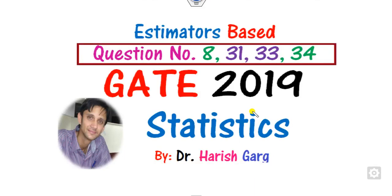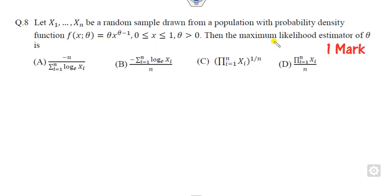Hello everyone, welcome to the next lecture on the GATE 2019 statistics. Today we will discuss four questions related to the maximum likelihood estimator as well as the estimator: questions 8, 31, 34, and 35. Let's quickly see what these questions suggest.